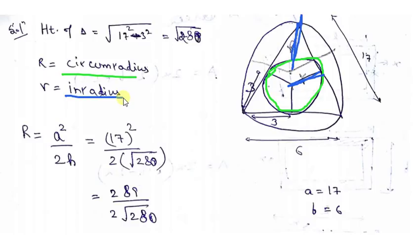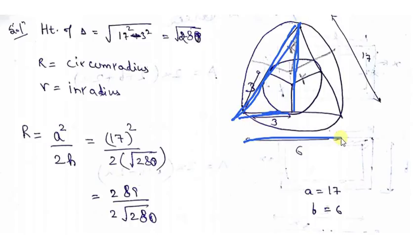To find these for an isosceles triangle, I'm giving a wonderful trick. Look, first find H. Now what is H? H is the height of the triangle. What is the height? It is hypotenuse squared minus base squared. Total base distance is 6, so this distance is 3. So 17 squared minus 3 whole squared is 289 minus 9, that is root 280.